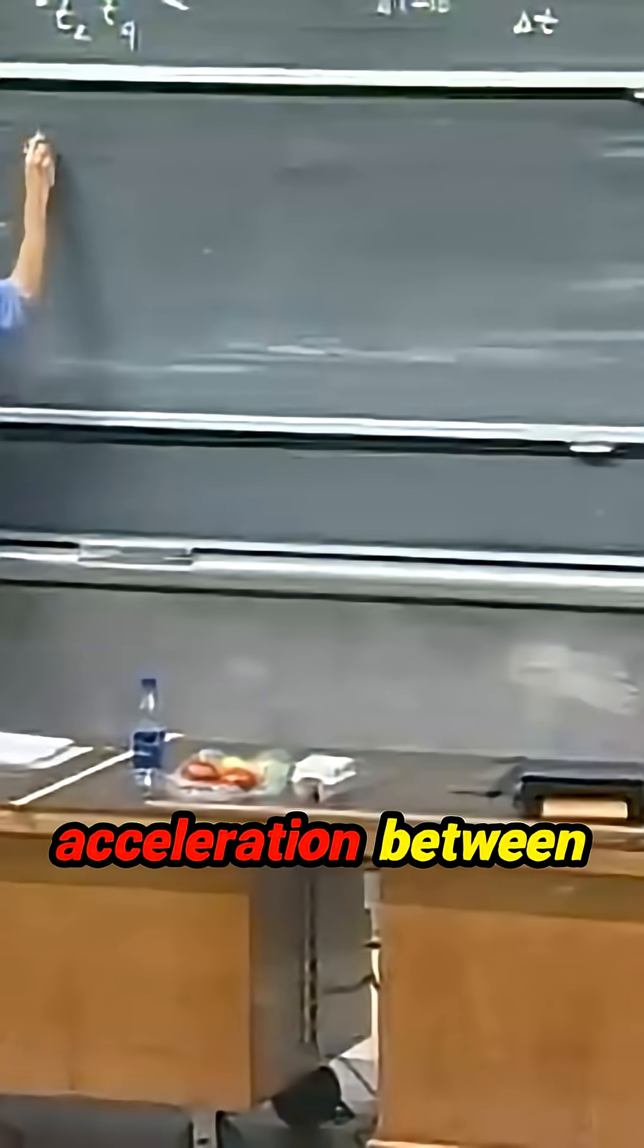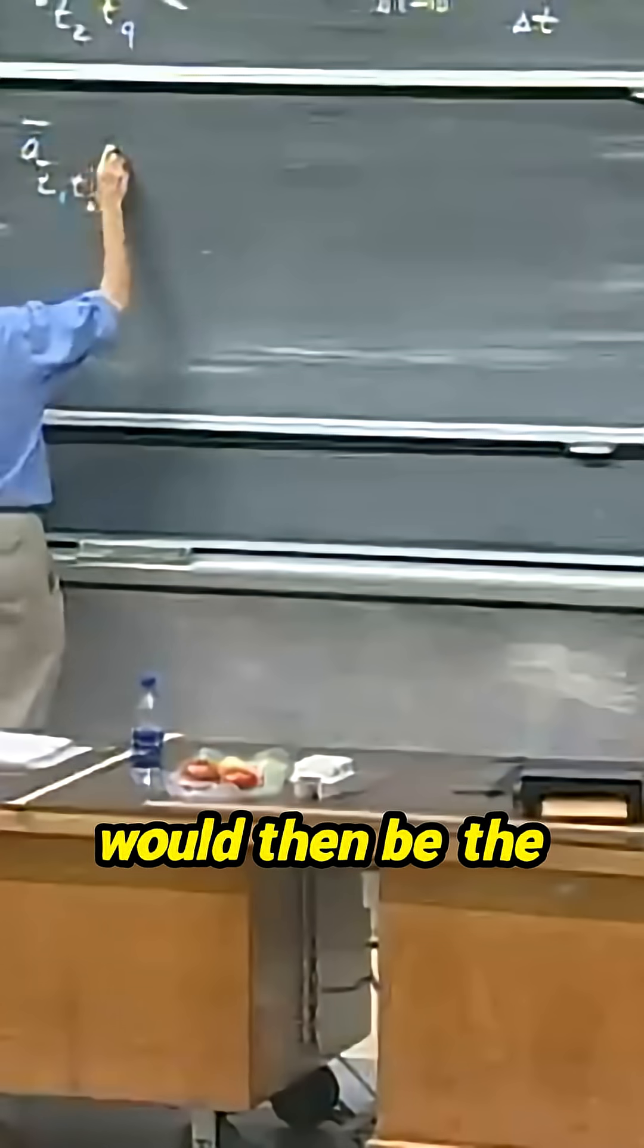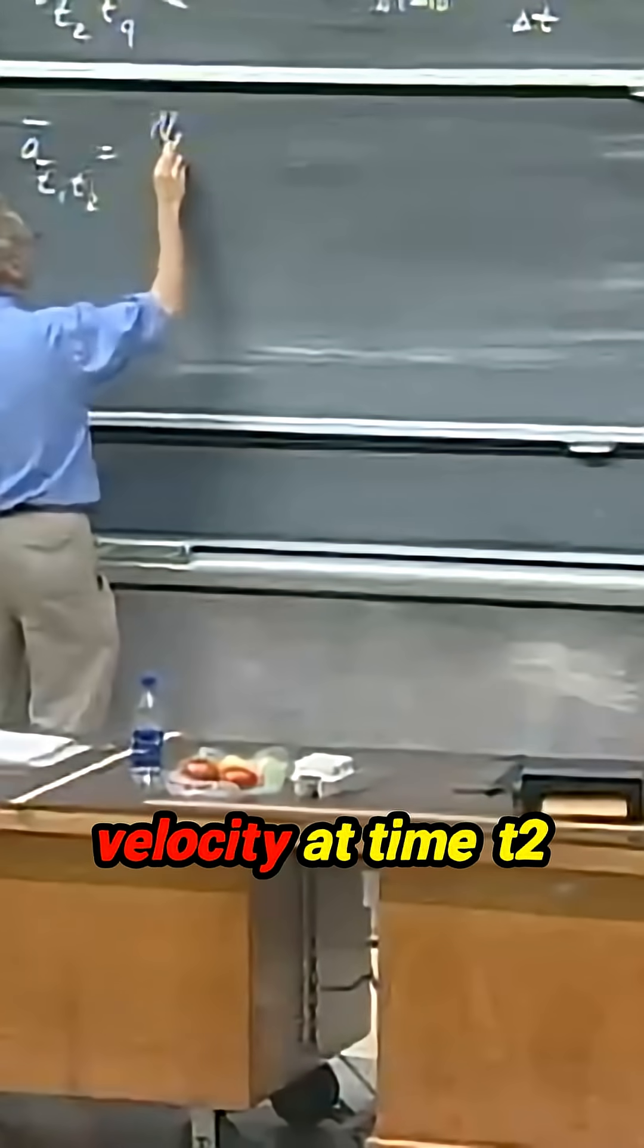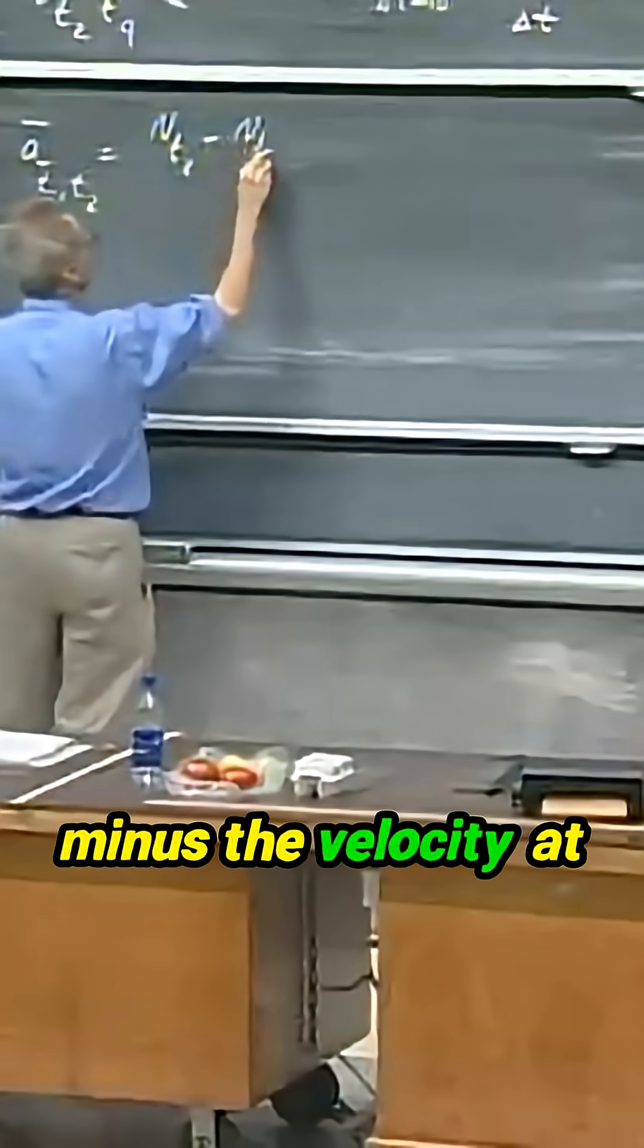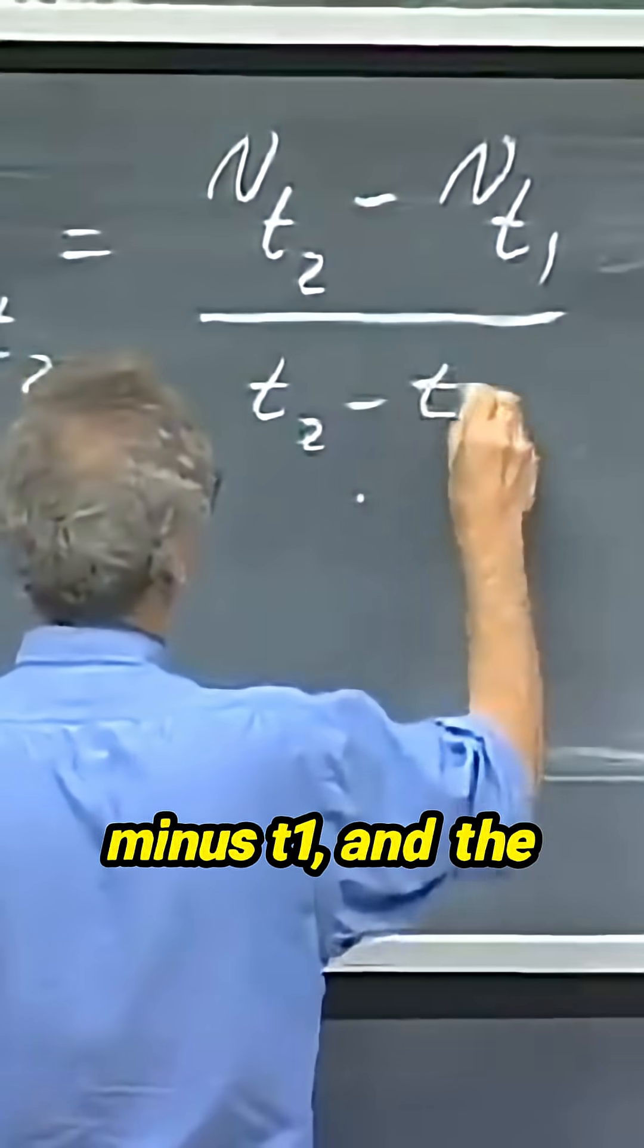The average acceleration between time t1 and time t2 would then be the velocity at time t2 minus the velocity at time t1 divided by t2 minus t1.